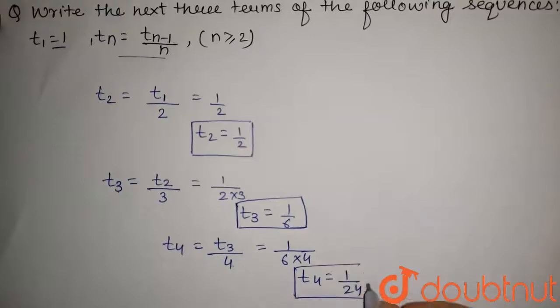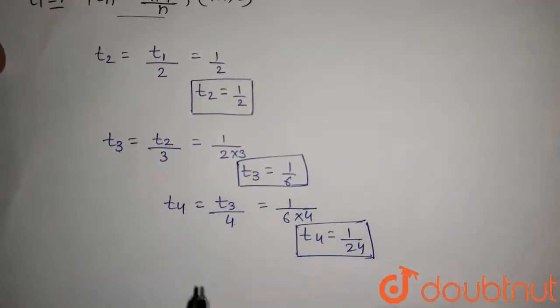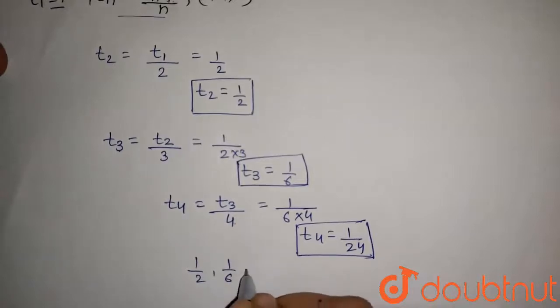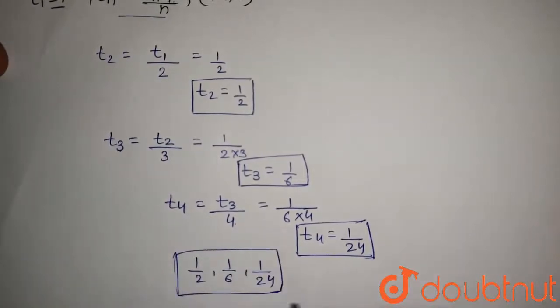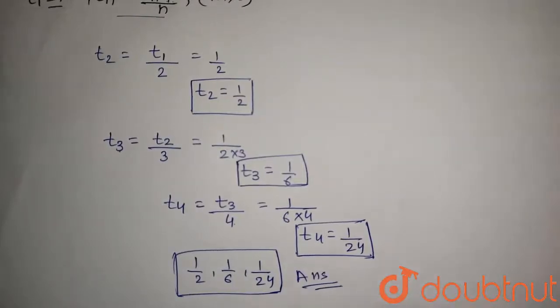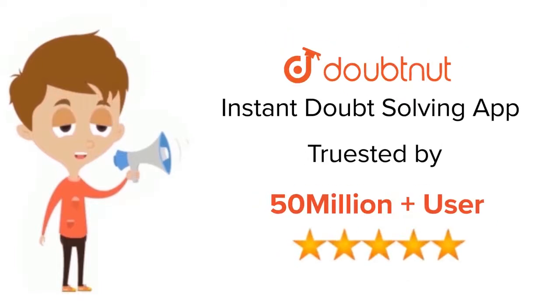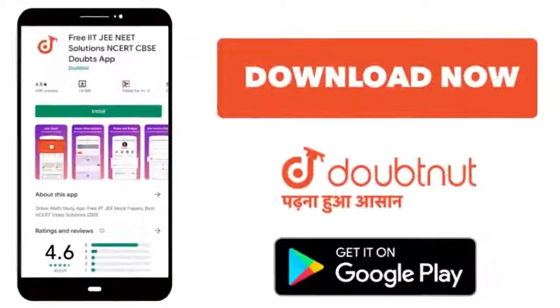So the next three terms of the given sequence is 1 by 2, 1 by 6, and 1 by 24. So these are the three next terms. So this is the answer of this question. Thanks for watching. For class 6 to 12, IIT, JEE, and NEET level, trusted by more than 5 crore students, download Doubtnut app today.